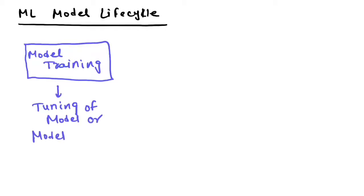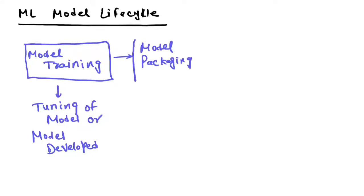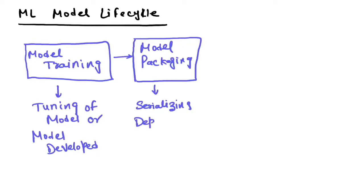Once you have developed the model and feel confident it gives good predictions on your sample dataset, the next step is model packaging. You convert your model or logic into a serialized version — there are different libraries available for that. You also specify all dependencies required to run that model in a production environment. This is the second phase of the model life cycle.